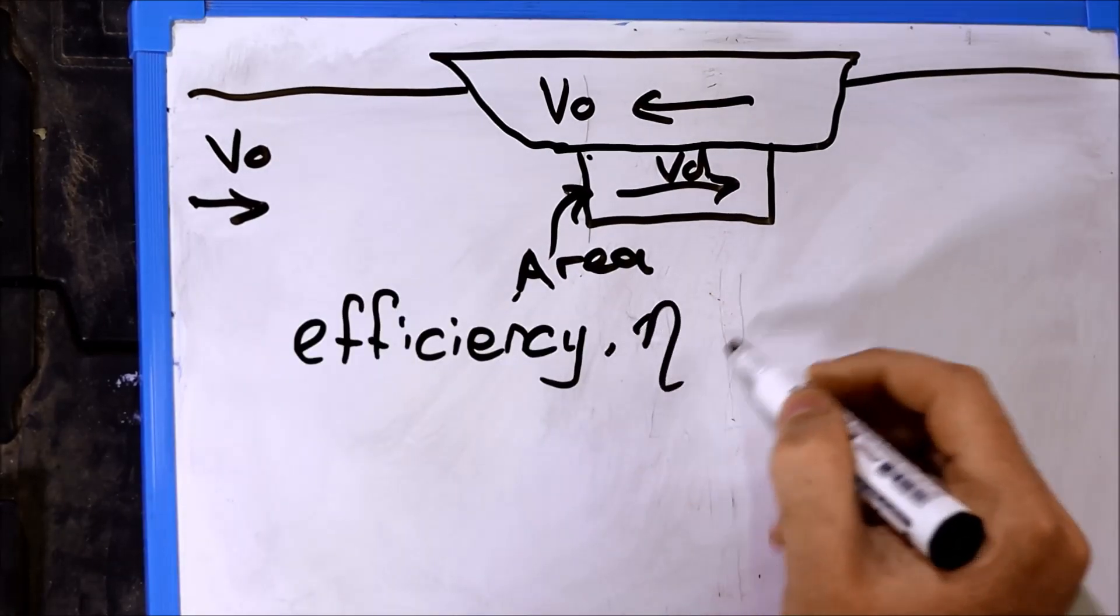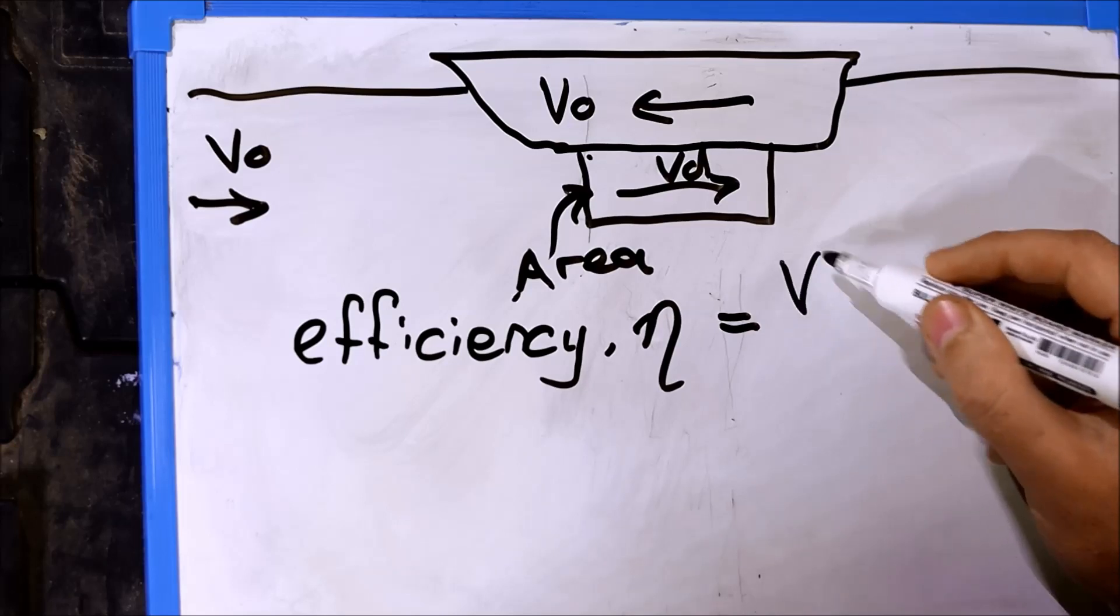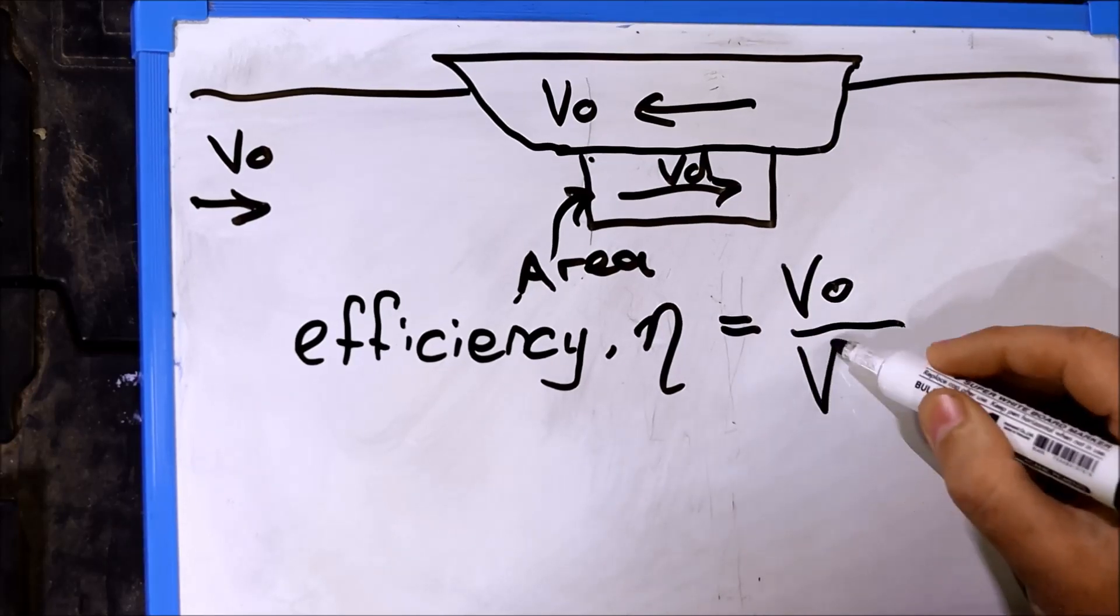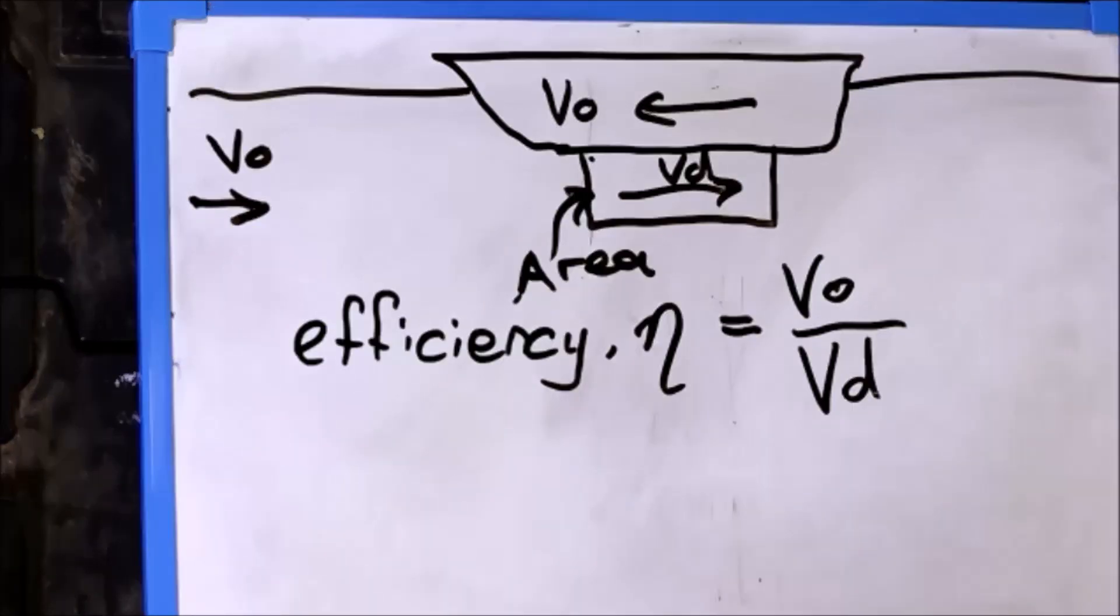Propulsive efficiency is simply the boat speed divided by the speed inside the duct. This is the maximum theoretical efficiency, and in real life, you still have to account for additional losses, such as the skin friction inside the duct.